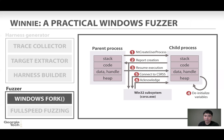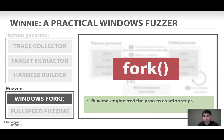On the fuzzer side, we analyzed the internals of the Windows process creation mechanism and identified the correct way to emulate fork behavior on Windows. This is the diagram we identified for the Windows version of fork. In the high level, we provide the fork interface the same as a Linux operating system, by reverse engineering the process creation steps. The fork facility runs complicated initialization only once.